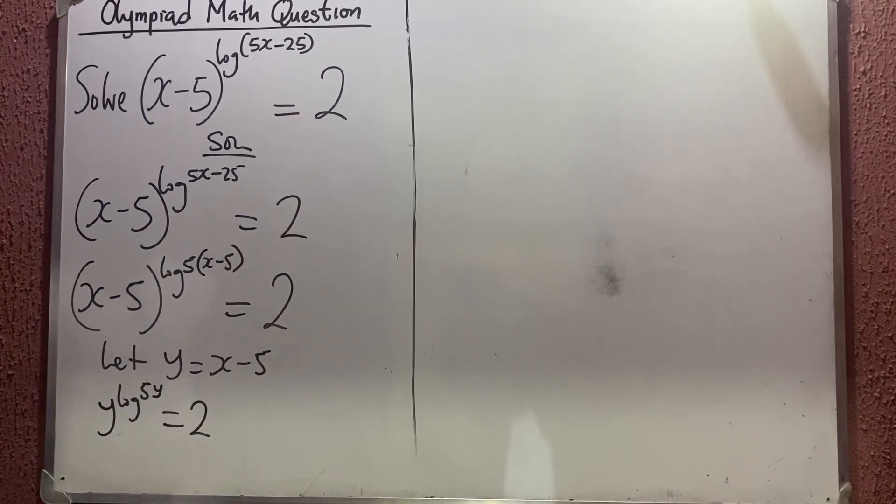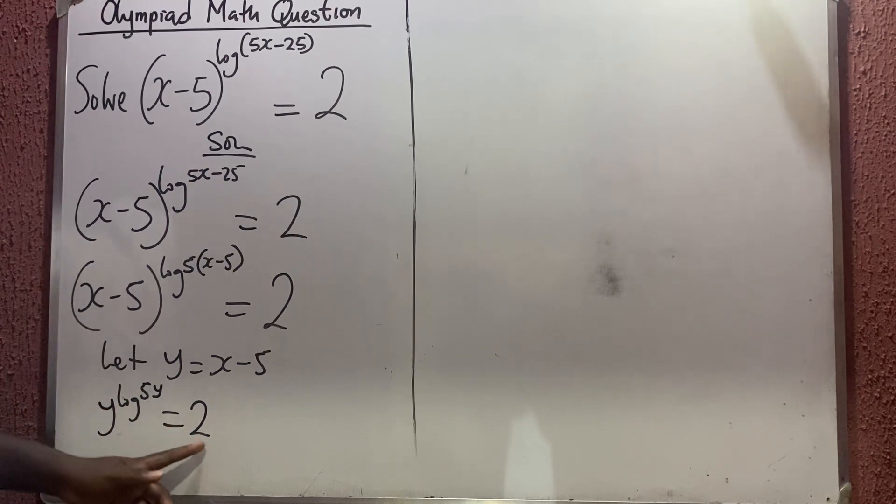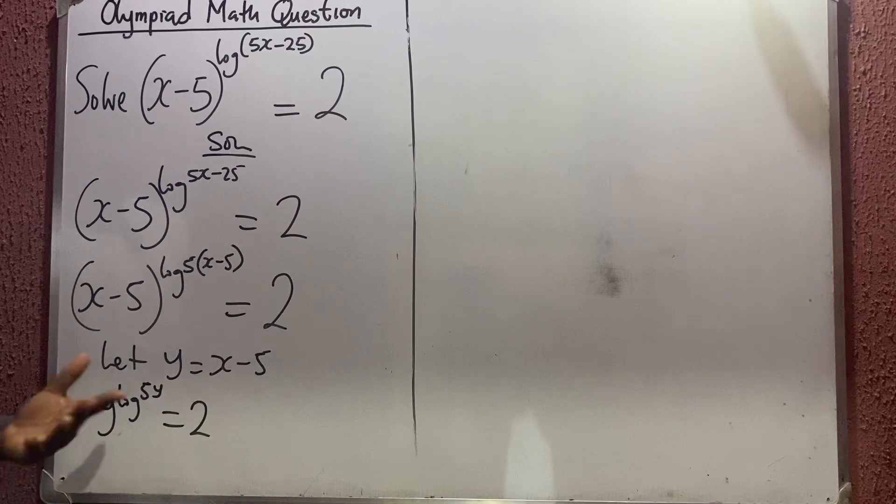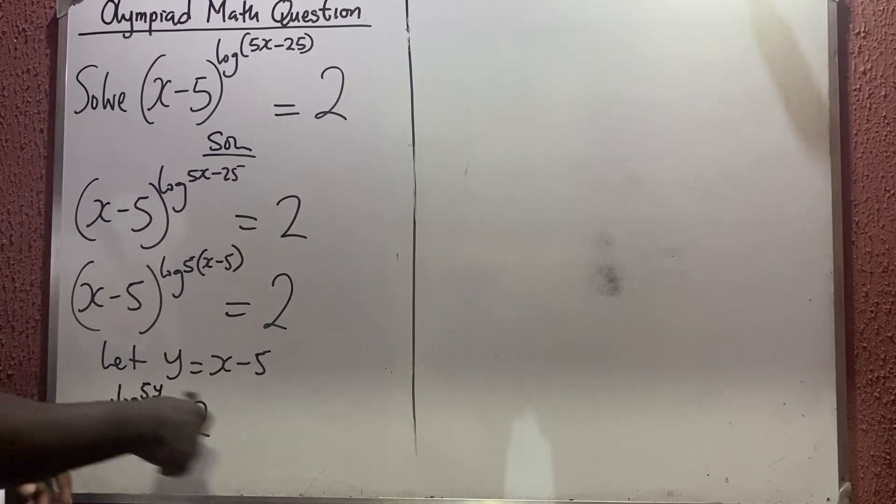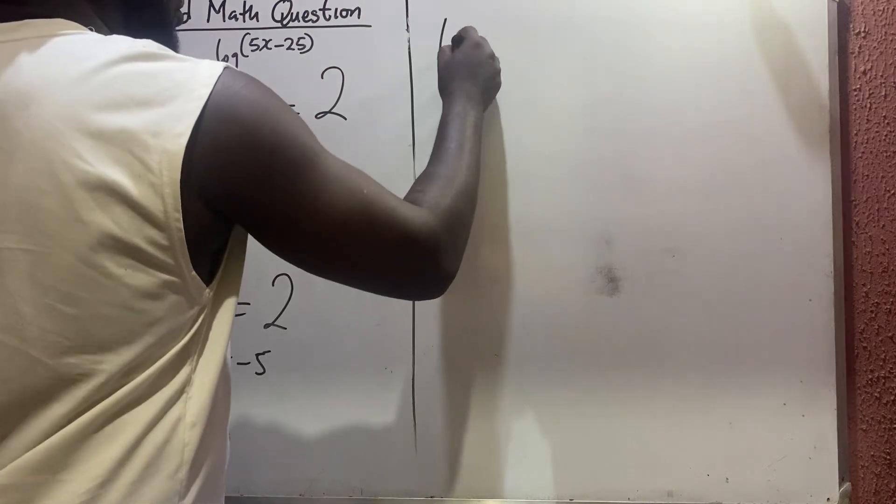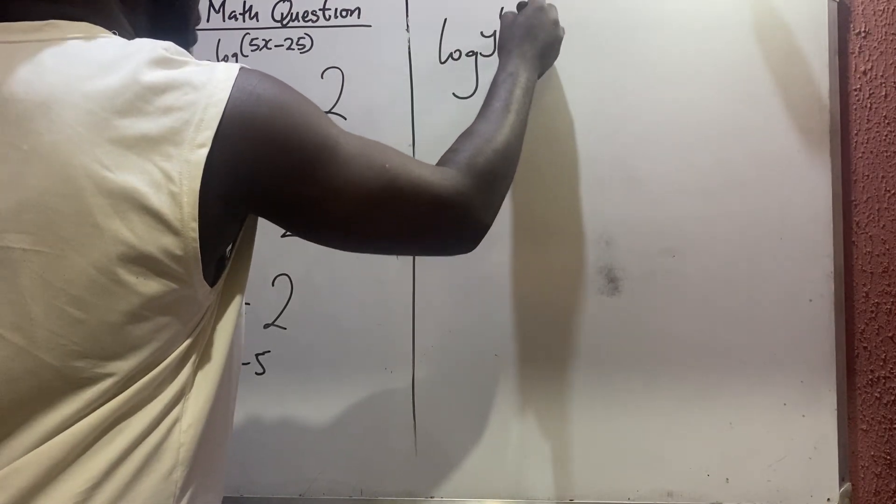Now whenever you have exponential functions like indices whereby the base cannot cancel out, we introduce log. So we're going to take the log of both sides. Taking the log of both sides is going to be log y raised to power log 5y equals log 2.